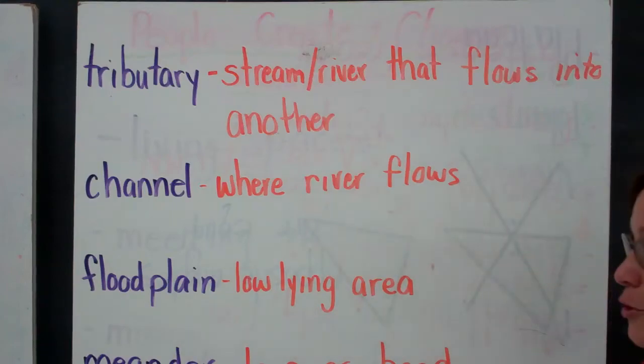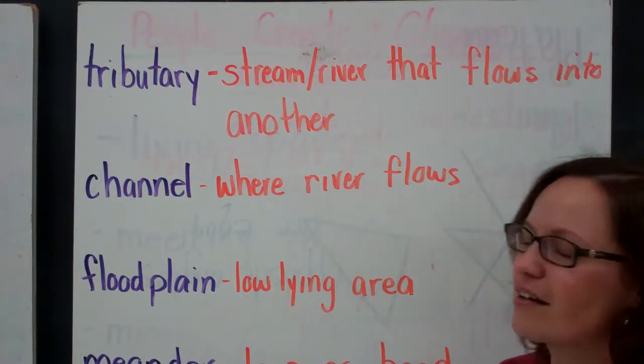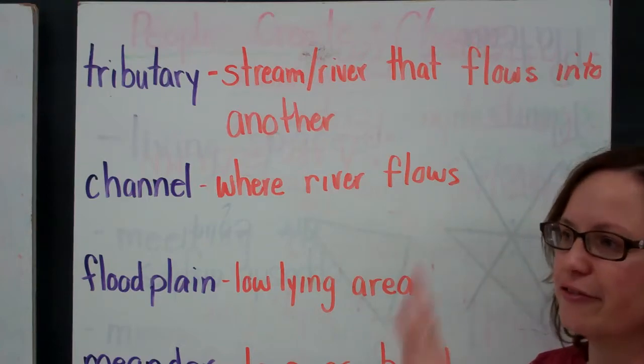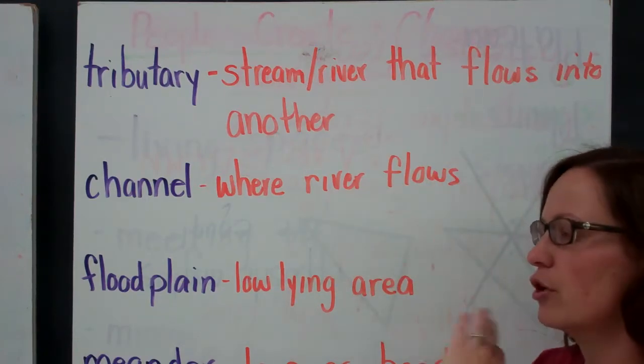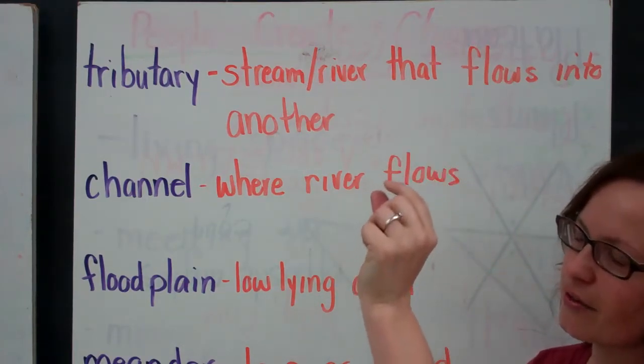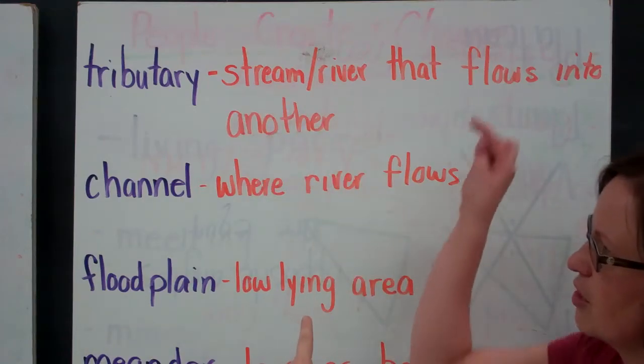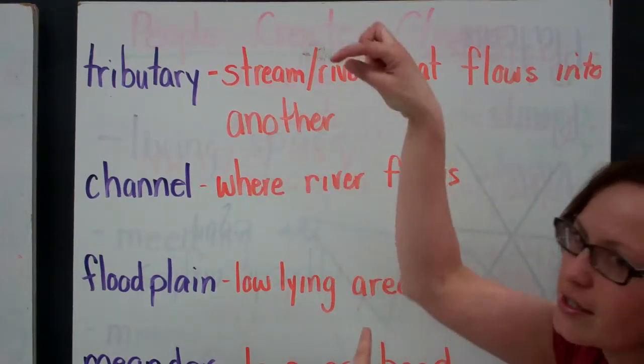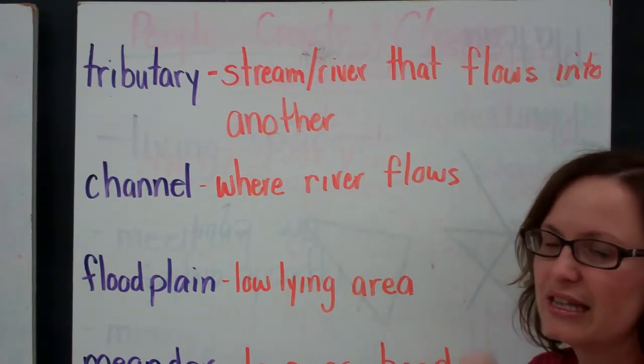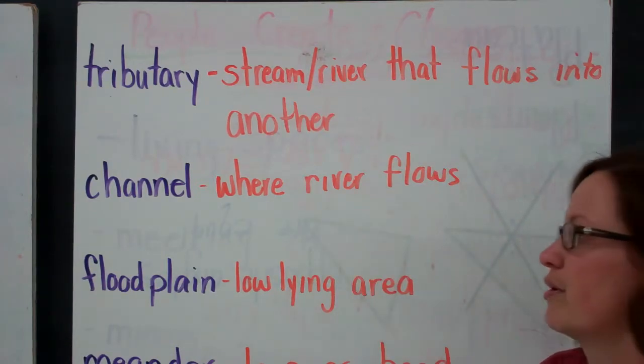Next we have tributary, which is my favorite word. These are smaller rivers that flow into a larger river. We'll look on our diagram, but if you ever see a map with a large river system and you have all these little branches, those are all tributaries. So, smaller river that flows into a larger river.